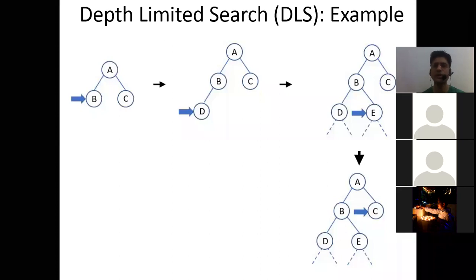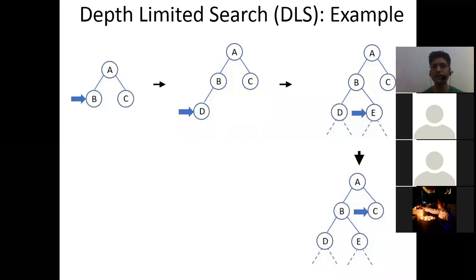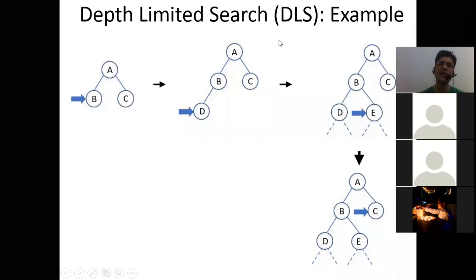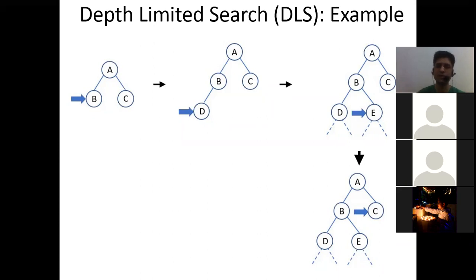This is how depth limited search works — it is just an extended version of depth first search. The drawback of DFS was that it could go into infinite search in depth if no constraint was set. Depth limited search resolves this and is also memory efficient. But the issue remains: if you are guessing the maximum depth and your solution exists beyond that depth limit, you cannot get that solution. Depth limited search can give you a solution only if the solution exists above the depth limit.